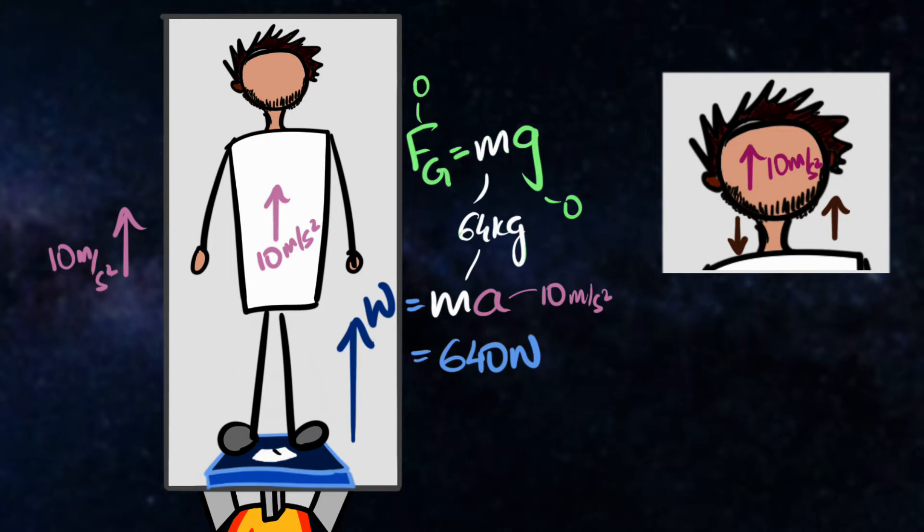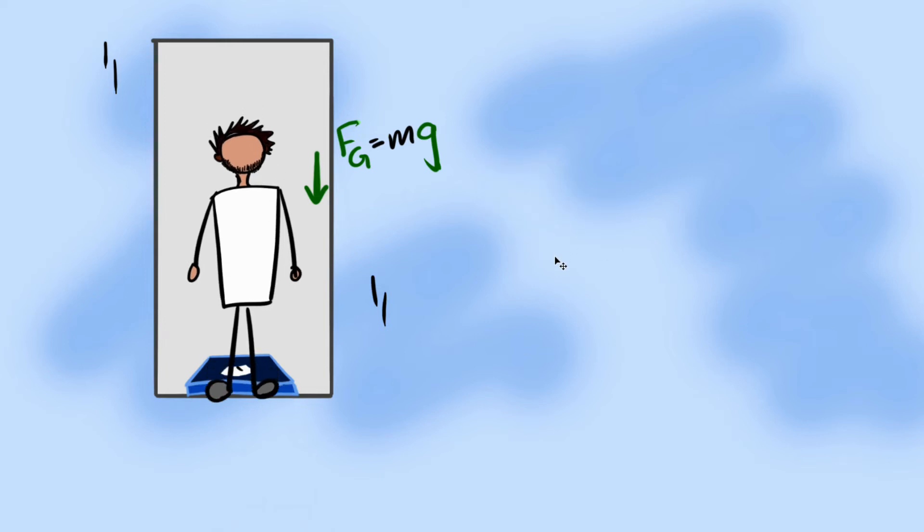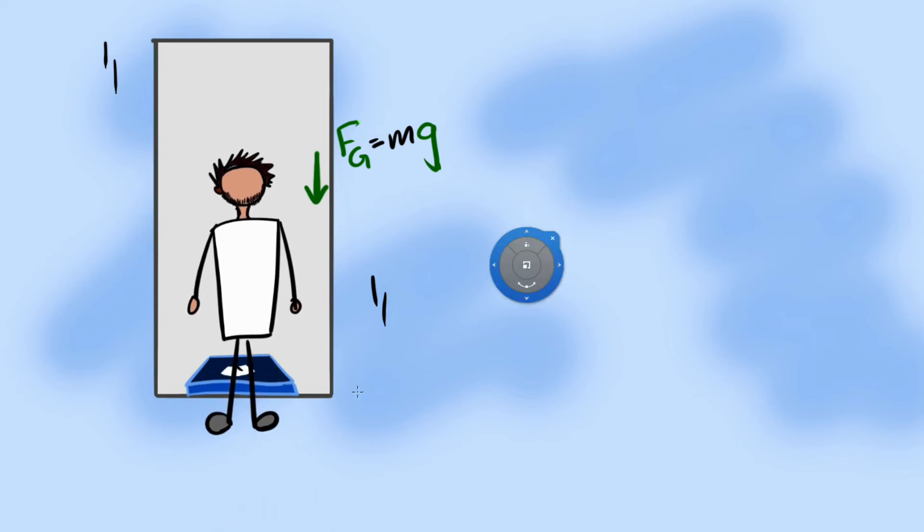Now let's consider the other extreme. You are inside the elevator on Earth, but you're falling. You're freely falling. So there's gravity acting on you, but would you have weight? Your whole body is accelerating down due to gravity and it's trying to press on the weighing scale.